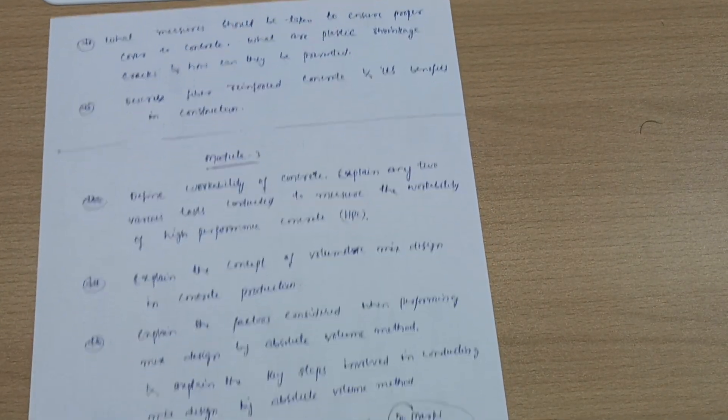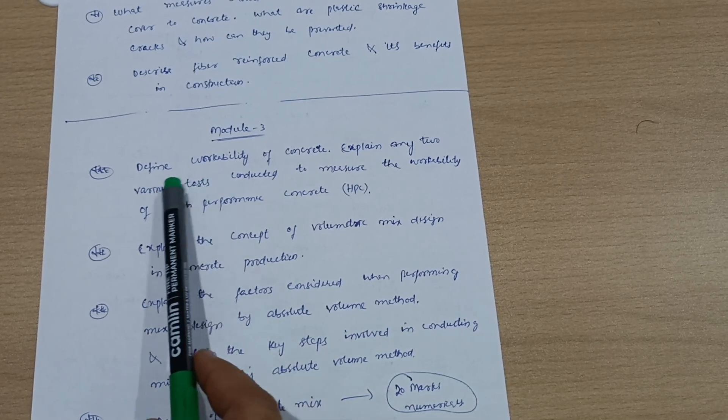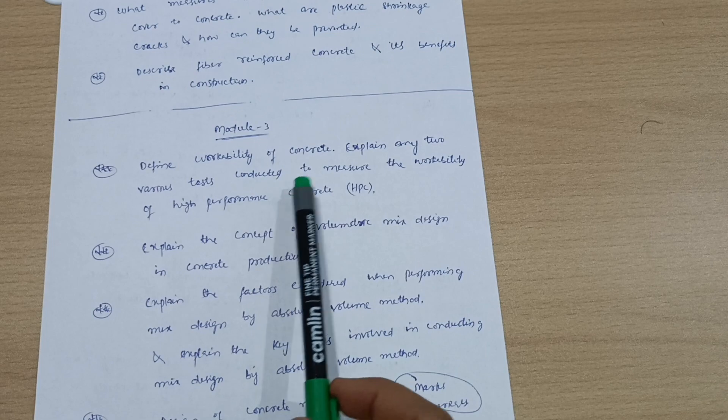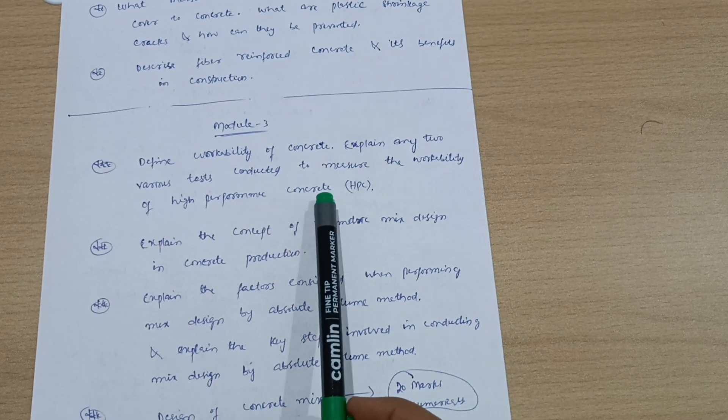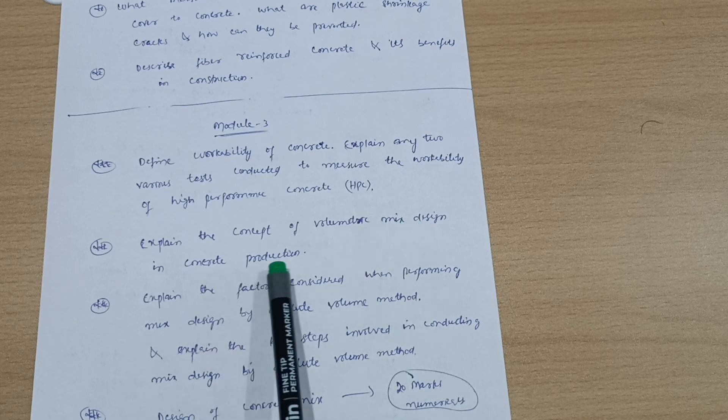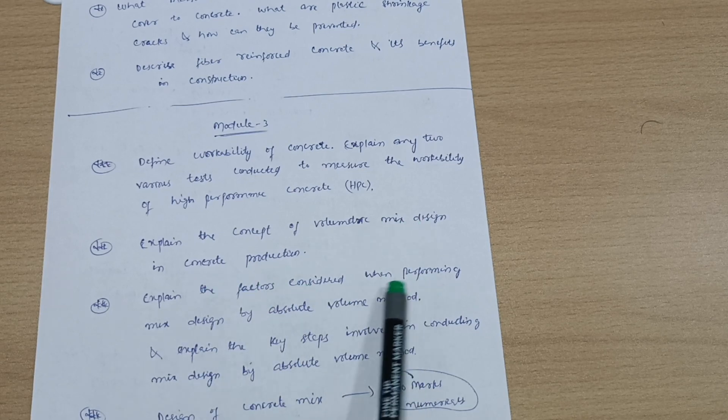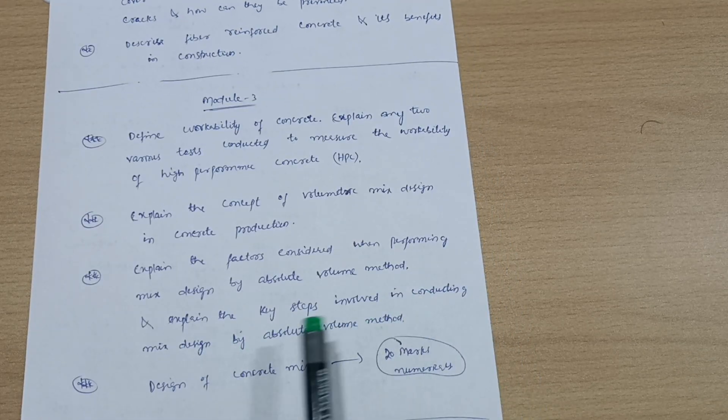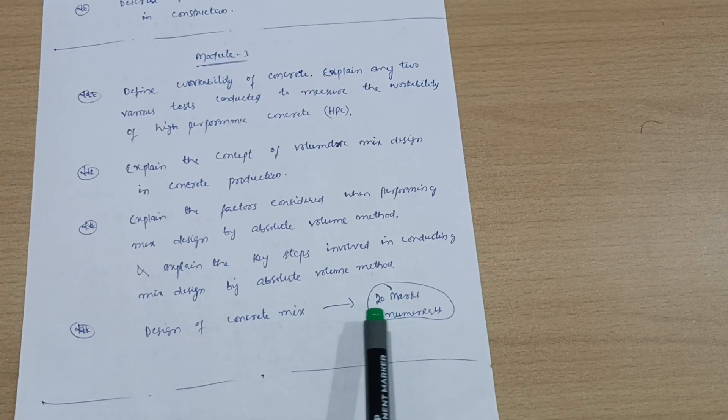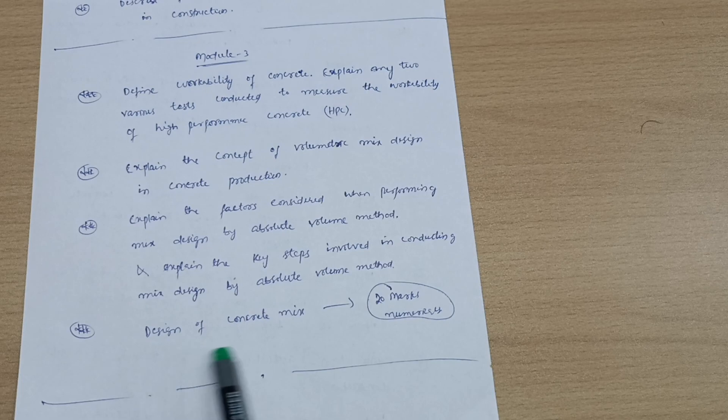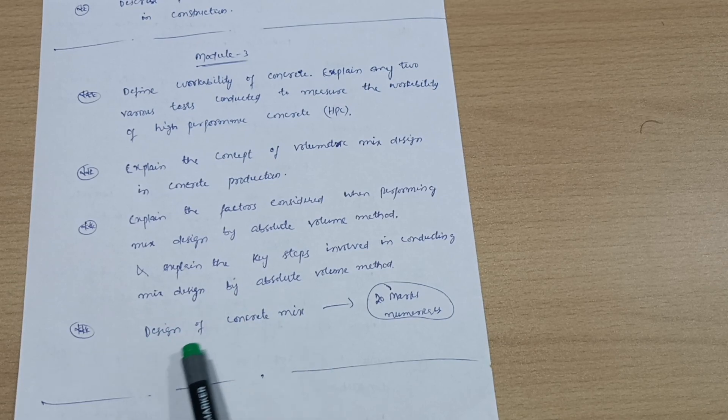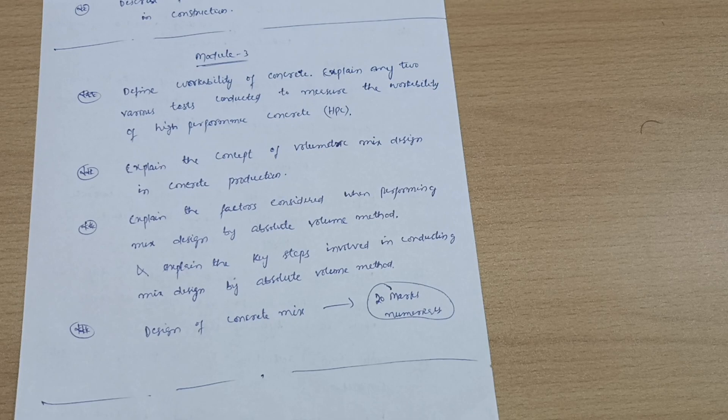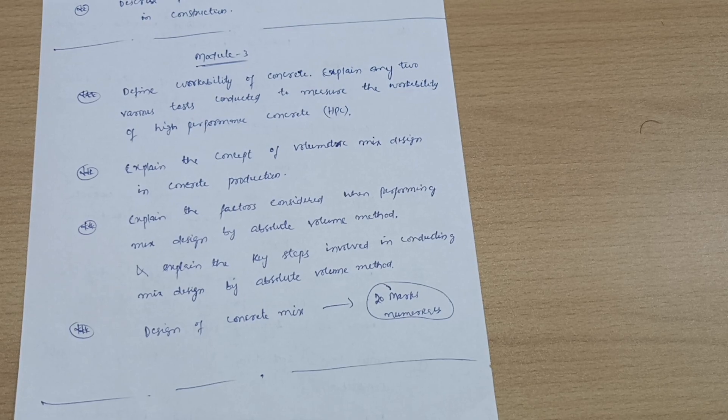Now Model 3. You have some problems also. First of all, try to cover theoretical portions like define workability of concrete. Explain various tests conducted to measure the workability of high performance concrete. Explain the concept of volumetric mix design in concrete production. Explain the factors considered when performing mix design by absolute volume method and the key steps involved. Or they can give you a 20 marks numerical simply on design of concrete mix. You can refer the paper 21CV62, that is Concrete Technology of sixth semester. Go through varieties of design problems, so 20 marks may be the question in the examination. These are all important questions of the subject Concrete Techniques and Practices.